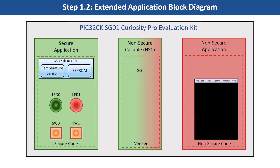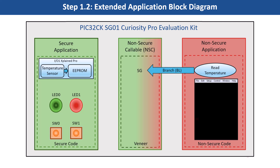Now, let's see how the extended functionality is implemented. The secure mode application reads the current room temperature from the temperature sensor on the IO1 ExplainPro extension kit every 500 milliseconds. Further, the application writes the temperature readings to the EEPROM and reads when a request is received from the non-secure application mode. Also, LED0 is toggled every time the temperature display request is received from the non-secure mode application. The periodicity of the temperature reading can be changed to 1 second, 2 seconds, 4 seconds and back to 500 milliseconds whenever the user presses the switch SW0 on the board.